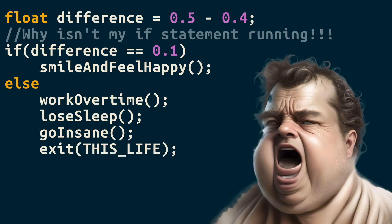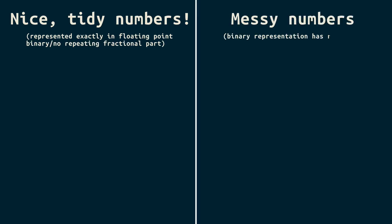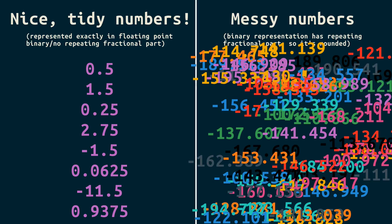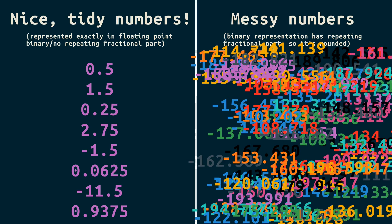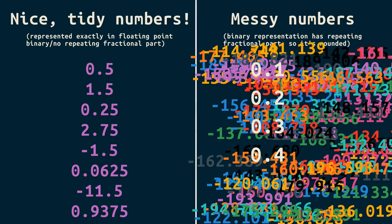How can we avoid this? Maybe we just don't use numbers that trigger this problem. Anything that's a power of 2, including negative powers, or a finite sum of those won't have this problem. But most numbers aren't like that. Many numbers that look easy to us get rounded off as a float, and that leads to issues.